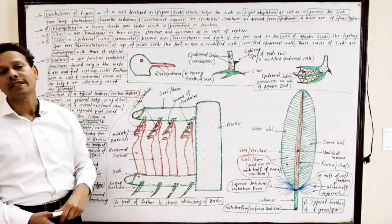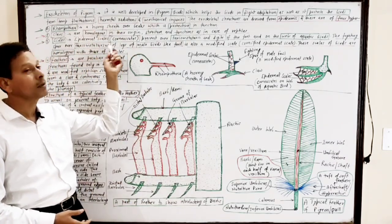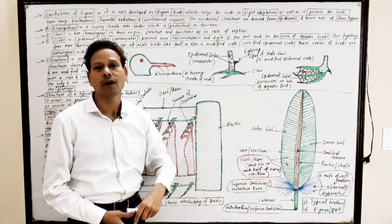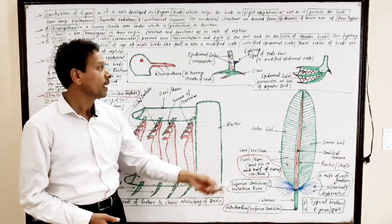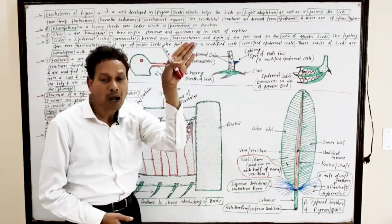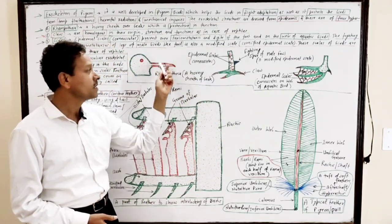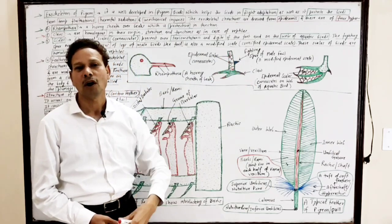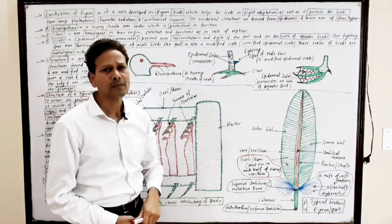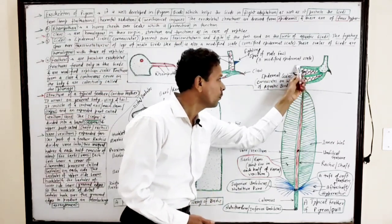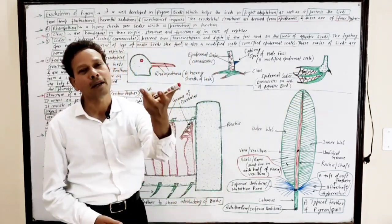The next structure is scales — epidermal scales, also called corneous scutes. These epidermal scales are characteristic features of reptiles and lizards, and they are present over the hind limb in the case of birds. In aquatic birds, the web of the hind limb also possesses epidermal scales.